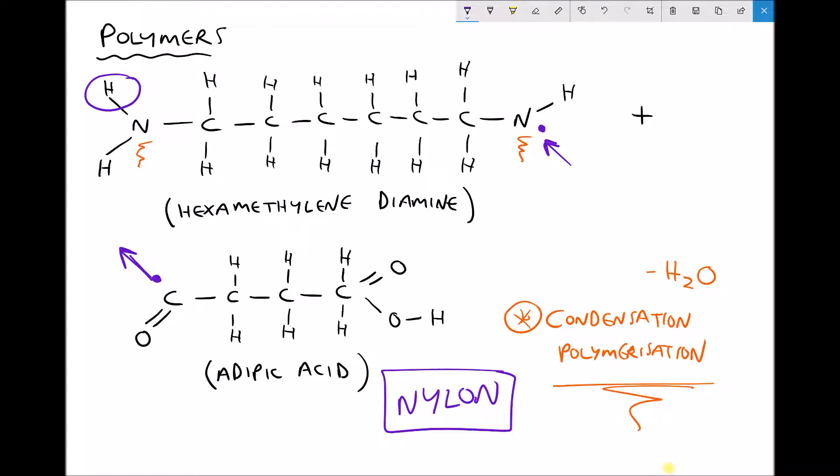So what influences whether we end up with a linear, a branched or a cross-linked polymer? One of the important things that will affect this is the conditions that are present during these reactions. We can adjust things such as pressures and temperatures and these will have an impact on how these monomers bond together and whether we end up with linear, branched or cross-linked polymers.